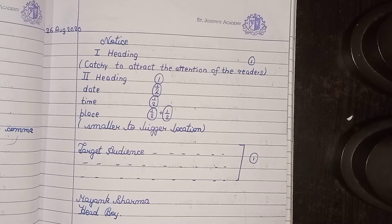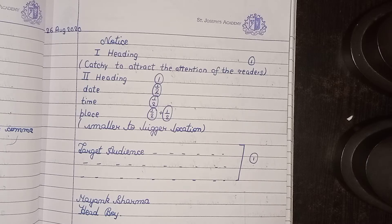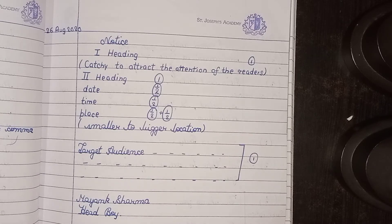After writing the first heading, you will leave one line and then write the second heading. For example, if your school is organizing an inter house GK competition, you will write 'Inter House GK Competition.' Coming to the next line is the date — you have to write the present date, for example 26 August 2020, and you have to write a comma before 2020.